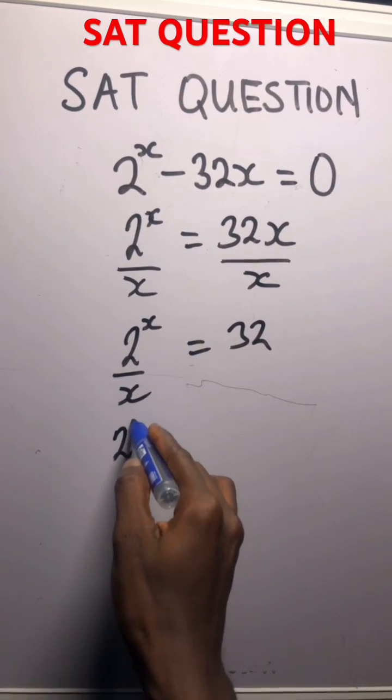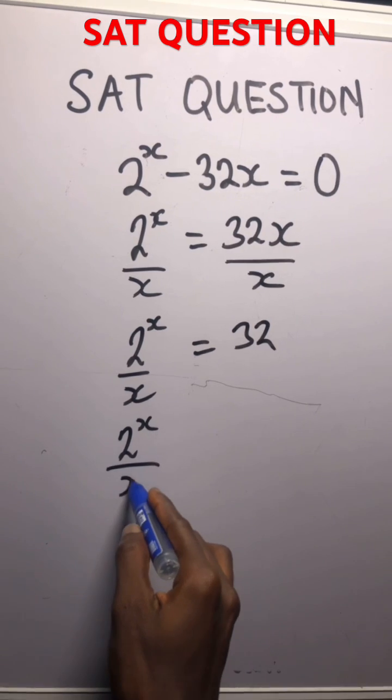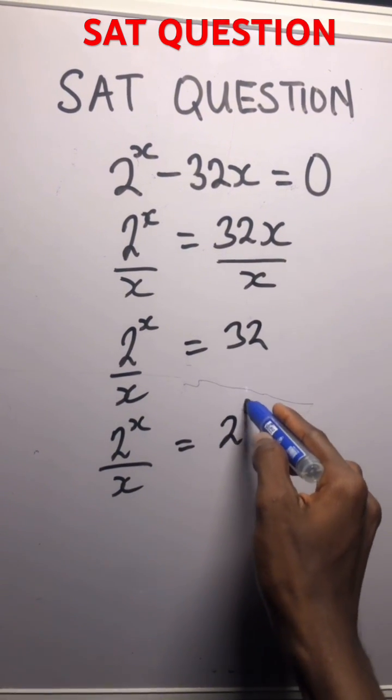And now this is 2x over x equals 2 to the power of 5.